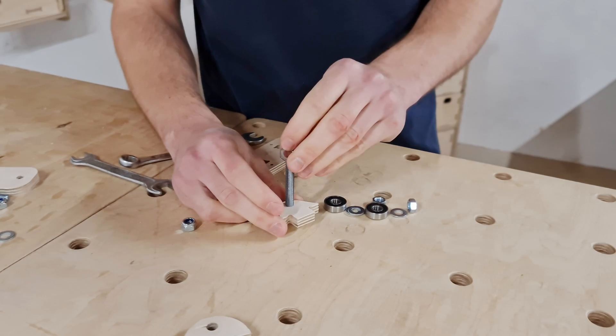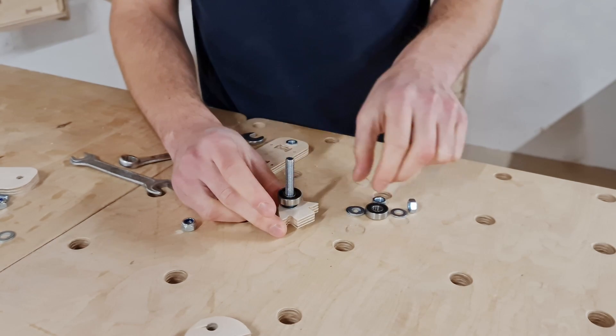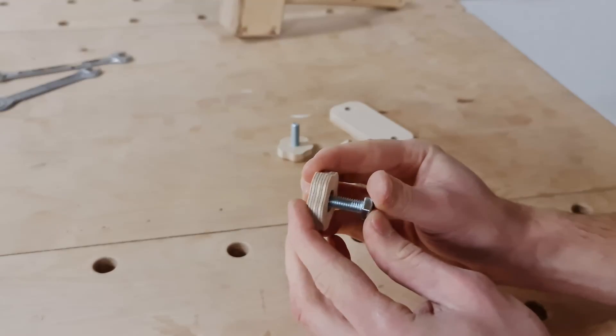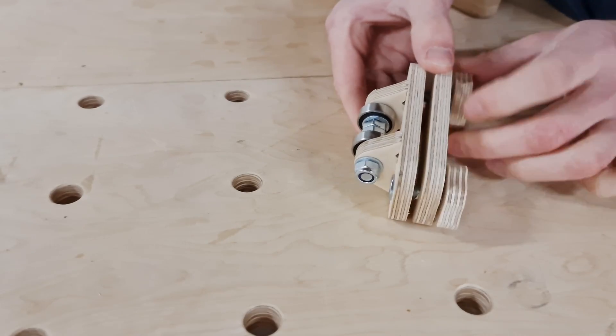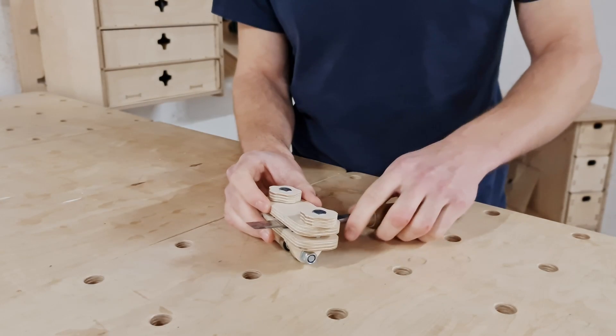This time I assembled the bearing module before attaching it to the main panel. Now everything was working fine and it was time to attach the hold down panel, the star knob screws, and secure a chisel in place.